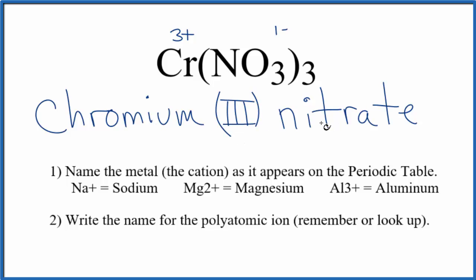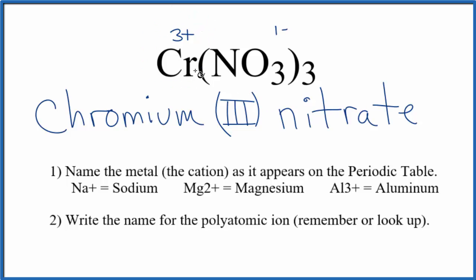So the name for Cr(NO₃)₃ is chromium(III) nitrate, and the III is a result of the chromium having a 3 plus ionic charge. This is Dr. B with the name for Cr(NO₃)₃: chromium(III) nitrate.